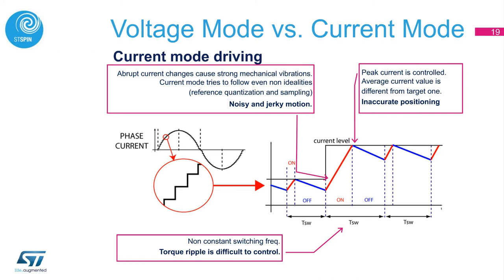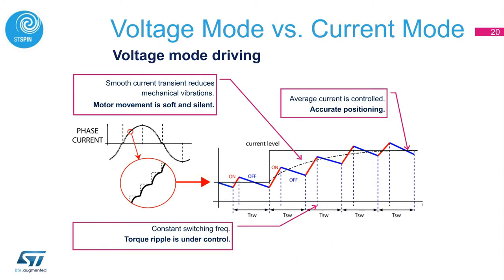In current mode control, fast current changes cause mechanical vibrations. Furthermore, current mode tries to follow a non-ideal profile due to reference quantization and sampling, which translates into noise and jerky motion. The peak current is controlled, and the result is that the average current value is different from the target, leading to inaccurate positioning. The voltage mode scheme reduces mechanical vibrations due to smooth current transients. Compared to peak current control, the average current is controlled and positioning is very accurate, achieving true microstepping. The switching frequency is constant and torque ripple is under control.